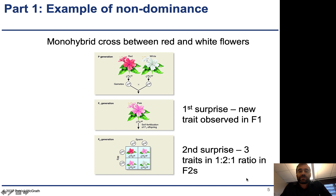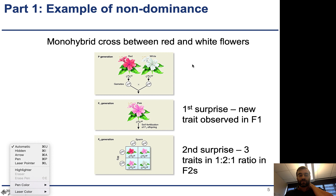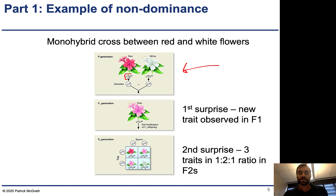As a first example, we're going to cover non-dominance. A lot of the rules are the same, with the exception that the way two alleles interact in a heterozygote can be a little different. The best common example is a four o'clock flower. These flowers have different petal colors — red and white. The first thing to note is that these flowers are breeding true, so they're homozygous, controlled by a single gene. CR is the allele that controls red.